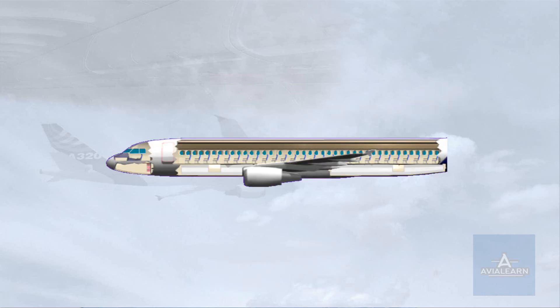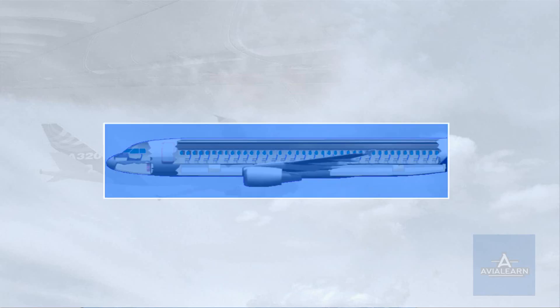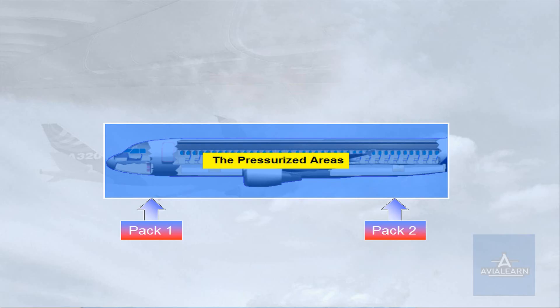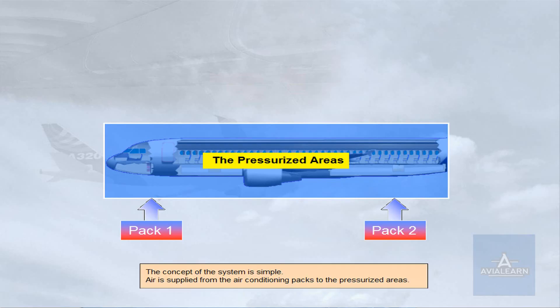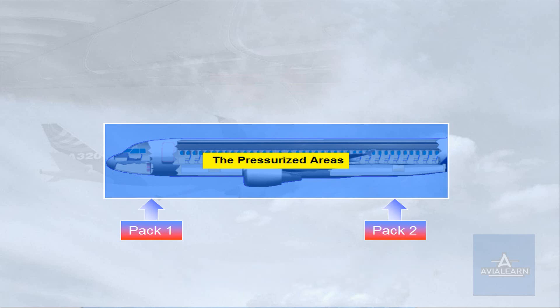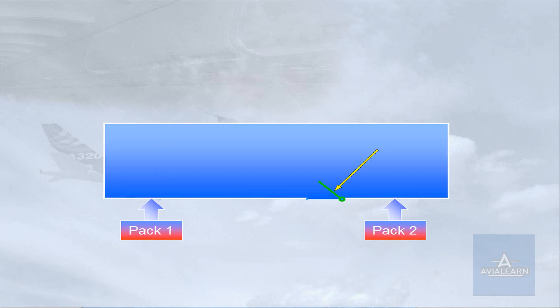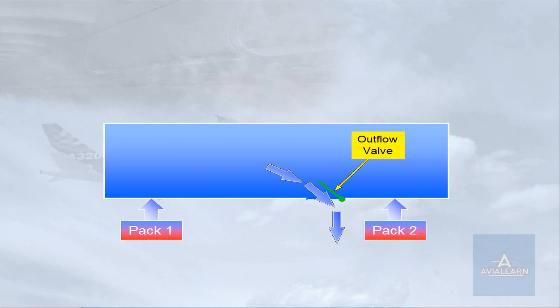The concept of the system is simple. Air is supplied from the air conditioning packs to the pressurized areas. An outflow valve is used to regulate the amount of air allowed to escape from the pressurized areas.